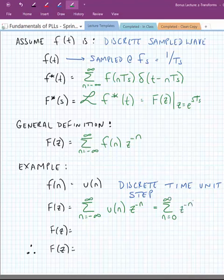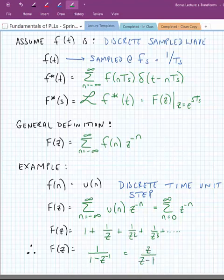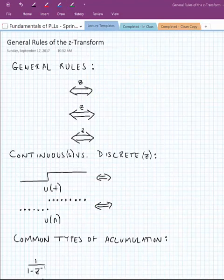All right. Well, when we do this, our f of z now becomes 1 plus 1 over z plus 1 over z squared plus 1 over z cubed and so on. And we can simplify this to the following expression: 1 divided by 1 minus z inverse, or it's equal to z divided by z minus 1.